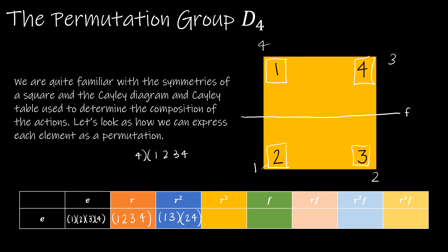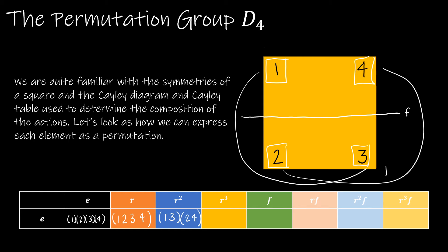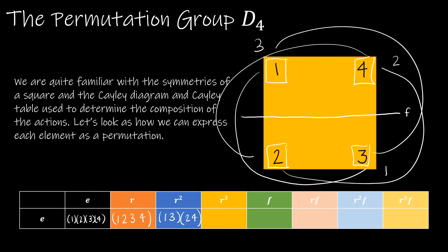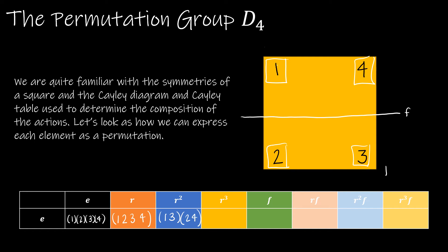Let's verify R² by actually rotating 180 degrees: one ends up in the three position, three ends up in the one position, two ends up in the four position, four ends up in the two position — so R² = (1 3)(2 4). That matches. For R³, we rotate three positions: one ends up in the four position, four in the three, three in the two, two in the one — so R³ = (1 4 3 2). That covers all the rotations.